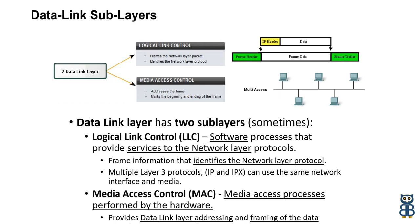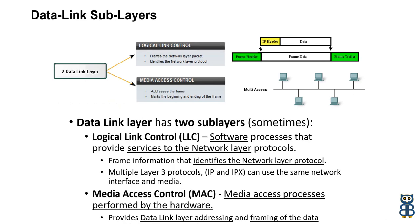The second sub-layer is Media Access Control, or MAC. Media access processing is performed by the hardware. It provides data link layer addressing and framing of data according to the protocol in use. Ethernet media access is a first-come first-served access method used where everyone shares the same bandwidth. Throughout the course, you will come across two addressing terms: logical addressing and physical addressing. Logical addressing is basically the address given by software, like an IP address, which is provided after your TCP/IP stack is loaded.